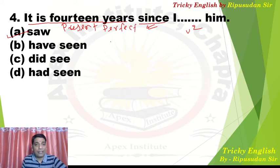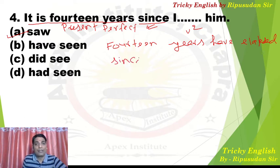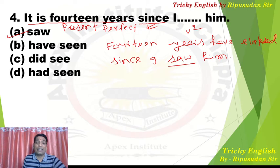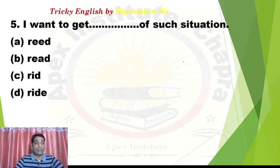You can also rewrite this structure as: '14 years have elapsed since I saw him.' In conversational English, 'saw' is used for meeting someone. It is perfectly suitable for meeting or seeing. So the answer for Q4 is A. Now Question 5: 'I want to get dash of such a situation' — I want to dash from this kind of situation. 'Get rid of' is a very popular phrase meaning to get rid of something — to free oneself.